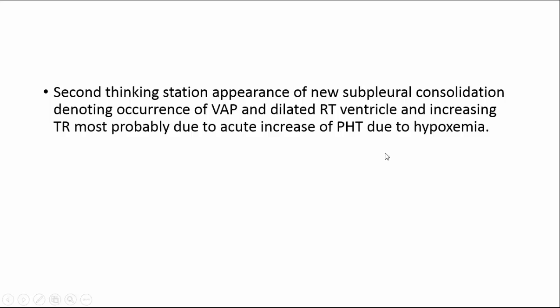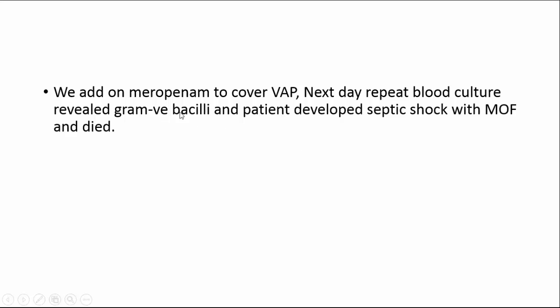Second thinking station: the second desaturation reveals new sub-pleural consolidations denoting VAP, and a dilated right ventricle with worsening tricuspid regurgitation most probably due to acute pulmonary hypertension from hypoxia and mechanical ventilation — not pulmonary embolism. We added meropenem to cover VAP, as the most important organism in our unit is gram-negative. The next day, repeat blood culture revealed gram-negative bacteremia — already covered. Unfortunately, the patient developed refractory septic shock and multiple organ failure and died. In this case we saw almost everything in critical care ultrasound: B-lines, congestion, sub-pleural consolidation, infection, valvular lesions, infective endocarditis, and a femoral catheter. It is a very good teaching case. Thank you for listening.